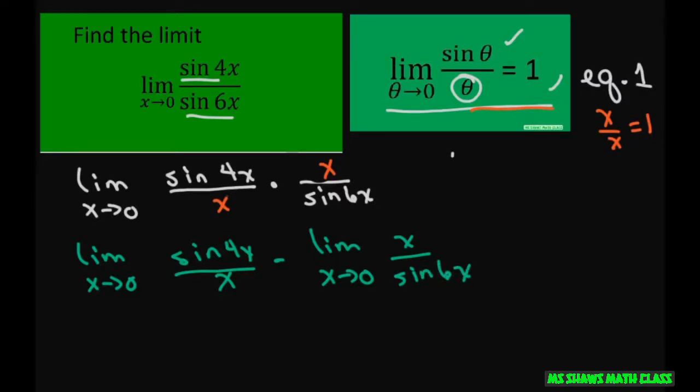Now what I'm going to do is go ahead and multiply this equation, the numerator and the denominator by 4. And this one, I'm going to multiply the numerator and the denominator by 6.